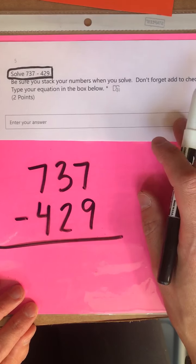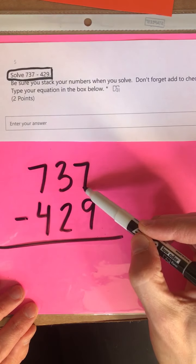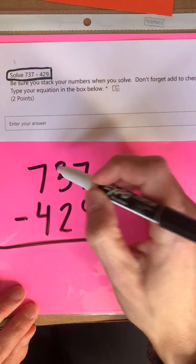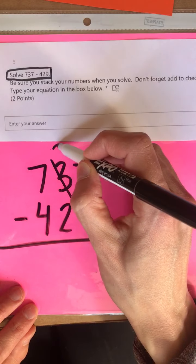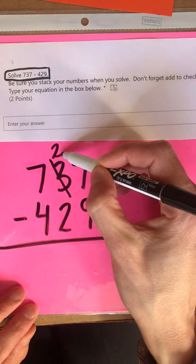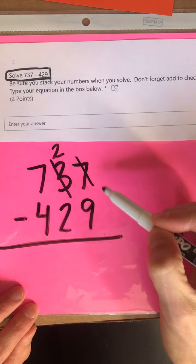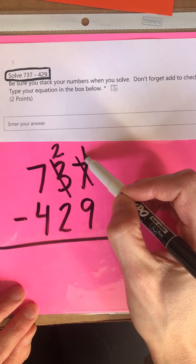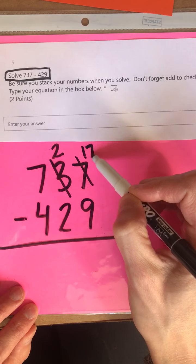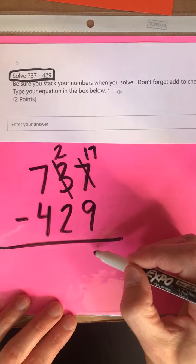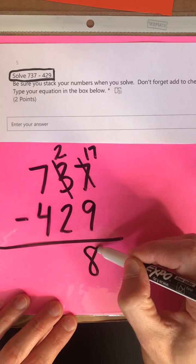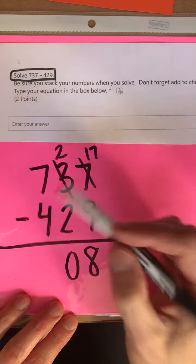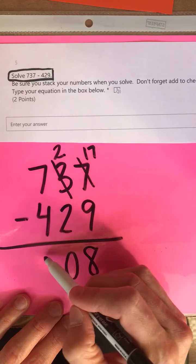Okay friends, great job. You should have noticed that 7 minus 9 you can't do — more on the floor, go next door. So we're going to borrow one group of 10. So 3 tens becomes 2 tens. We're going to regroup: break up one group of 10, adding 10 ones to 7 ones, so now we have 17. 17 minus 9 equals 8. 2 minus 2 equals 0. And 7 minus 4 equals 3.